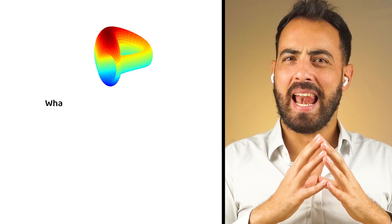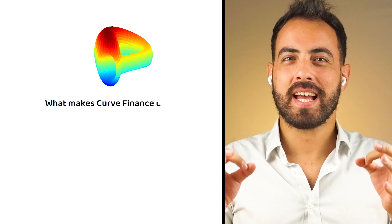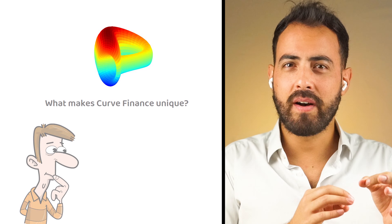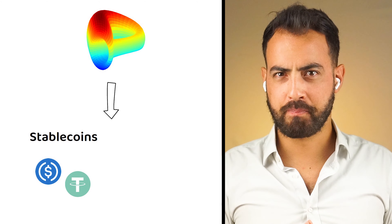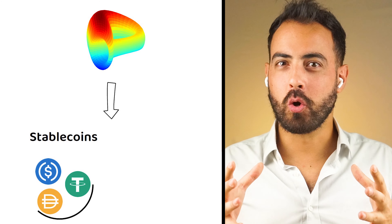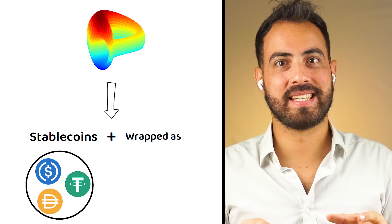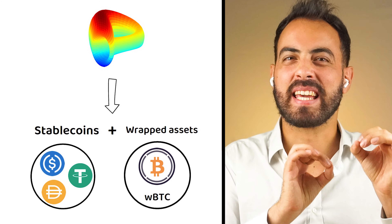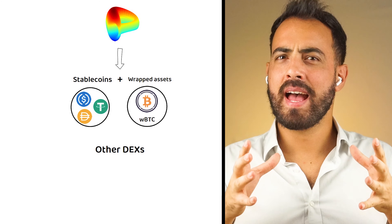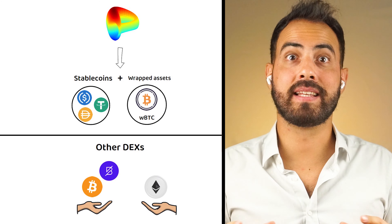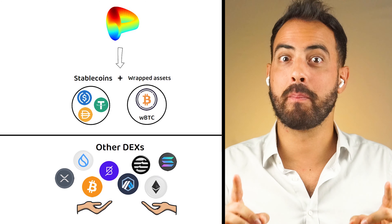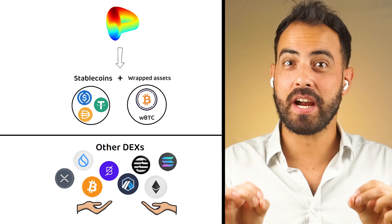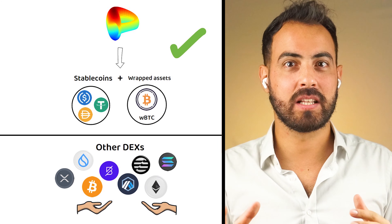Now, what makes Curve Finance unique? Curve Finance has niched out and targeted stablecoins as their sector. Stablecoins and wrapped assets such as wrapped BTC are what make Curve Finance unique. Other DEXs exist for those wanting to trade a wider range of crypto assets, but for those looking to get the best price between stablecoins, Curve wants to make itself the ideal platform.